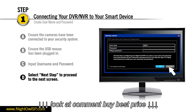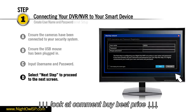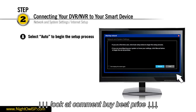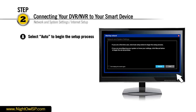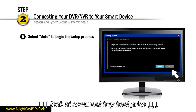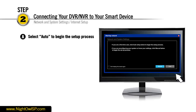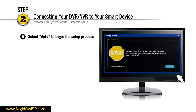By selecting the Next Step tab you will continue to the network and system settings screen. This screen allows you to begin configuring your network settings by following the on-screen prompts. Be sure to select the Auto tab to begin your network verification and configuration process.